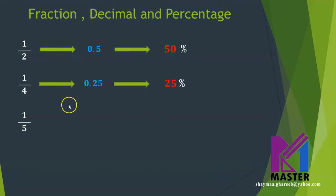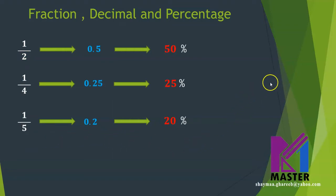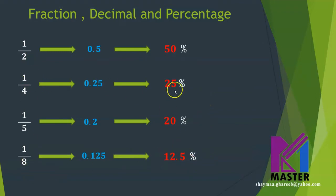So the quarter will be 25%. For one fifth, it is 0.2 or 0.20, so in order to change it into a percentage, it will be 20%. If you know the half, the quarter, and the fifth, you can get many other fractions using them. Let's talk about one eighth. We change it into 0.125, then into a percent as 12.5%. So these four fractions are very important to know by heart as decimal numbers and as percentages.